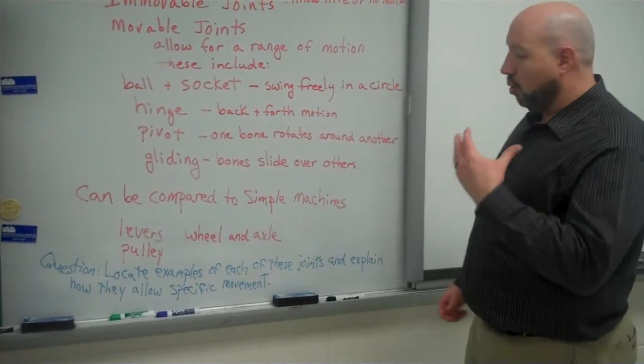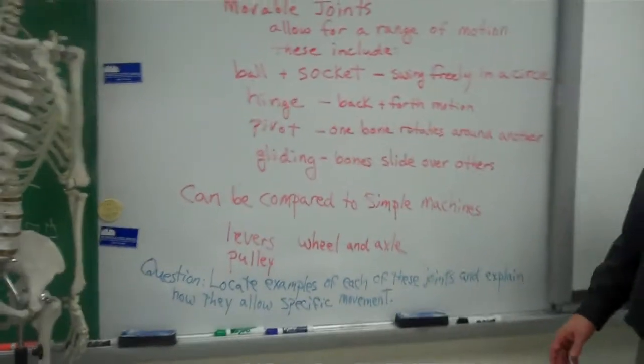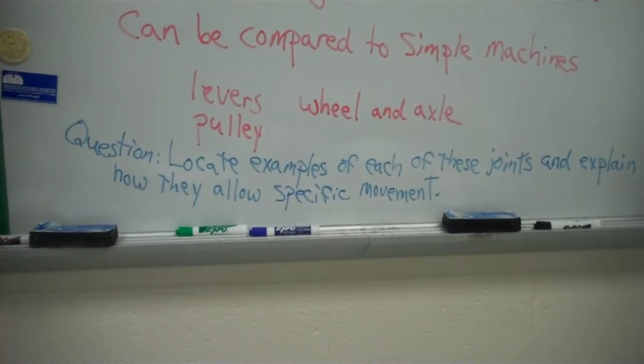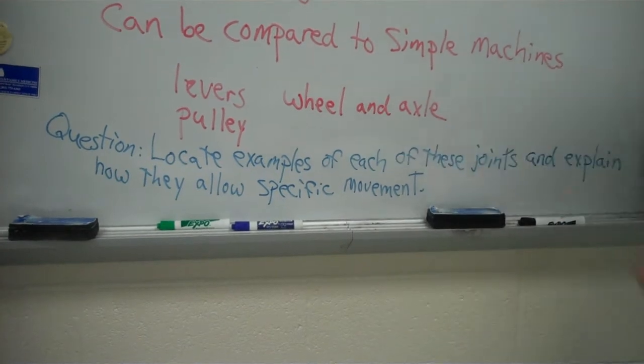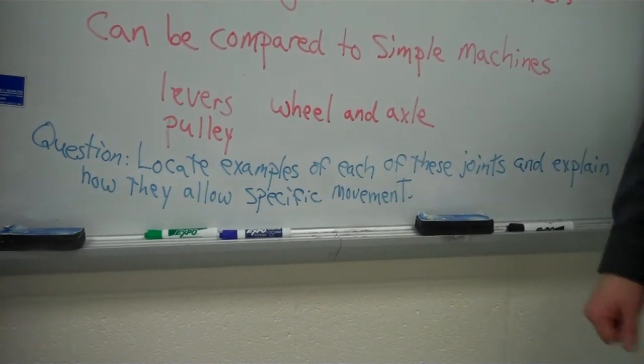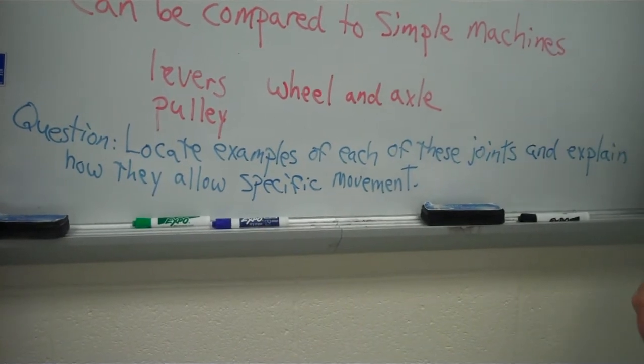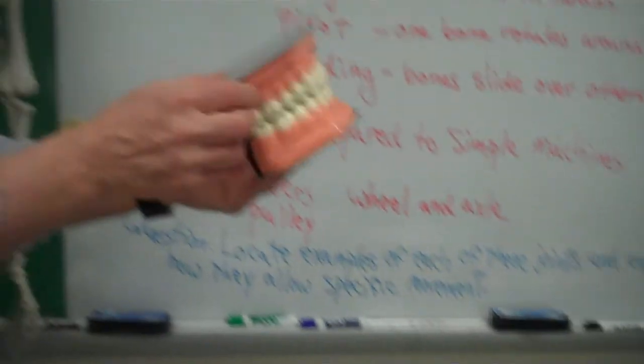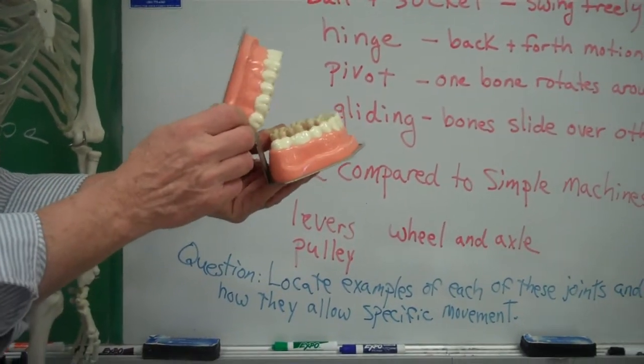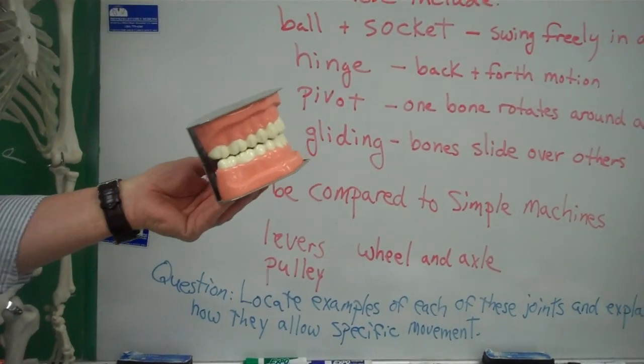Okay. And what we'd like you to do is locate examples of each of these joints and explain how they allow specific movements. Okay, so think about the different joints in the body. How do they allow very specific movements? Thank you, Mr. Maxwell. Now I know about joints. You're welcome.